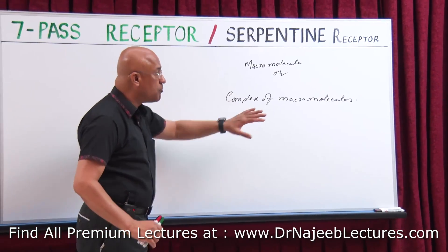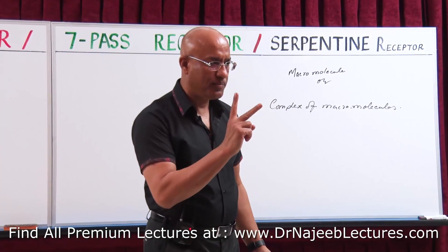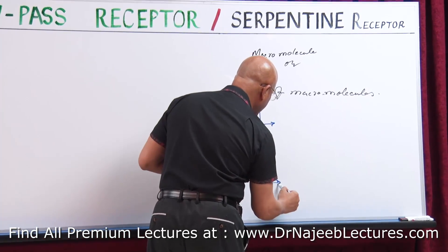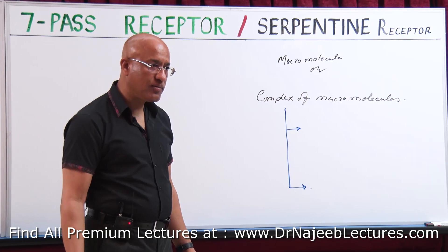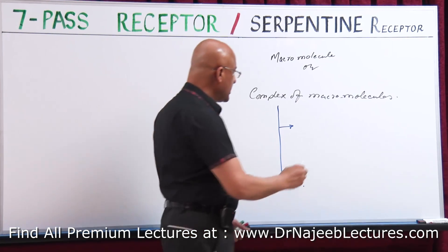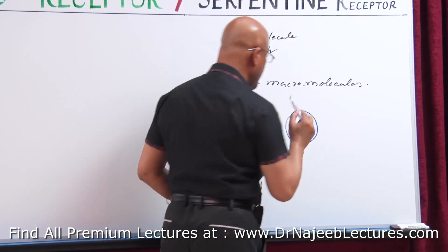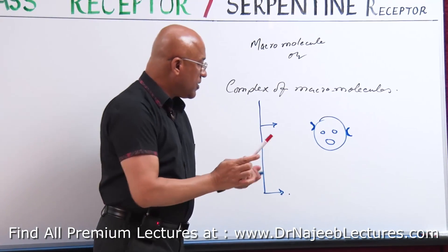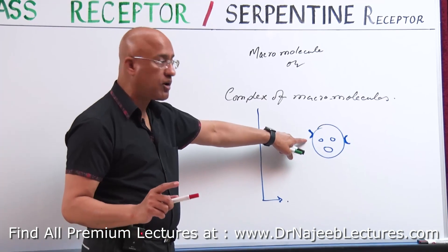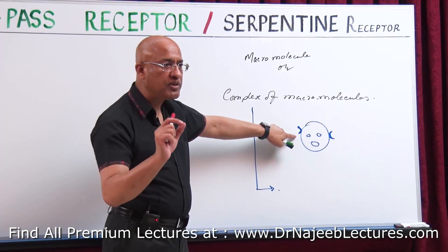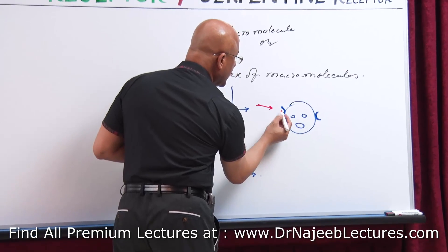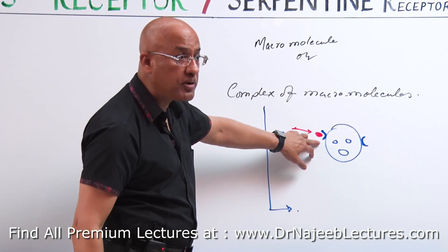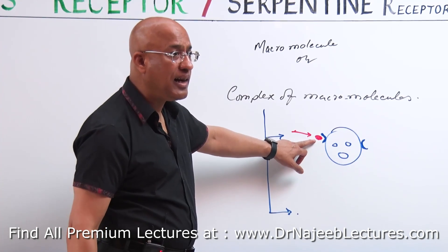Receptors are macromolecules or complexes of macromolecules which have two special functional domains. They should have at least two functional domains. One domain of the receptor should be such that a specific molecule can bind there. Such a molecule which binds with a specific domain of a receptor — that domain is called the ligand binding domain.